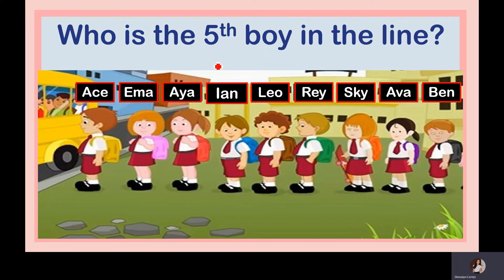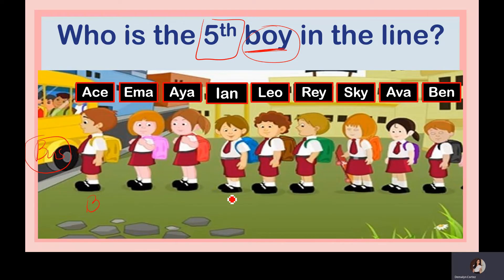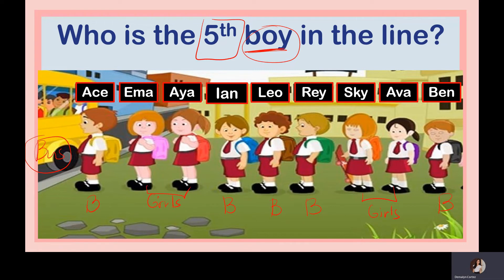Next: Who is the fifth boy in the line? The point of reference is the bus. Counting only boys — Ace is first, then skipping girls Emma and Aya, Ian is second, Leo is third, Ray is fourth, and Ben is fifth. So the fifth boy in the line is Ben.